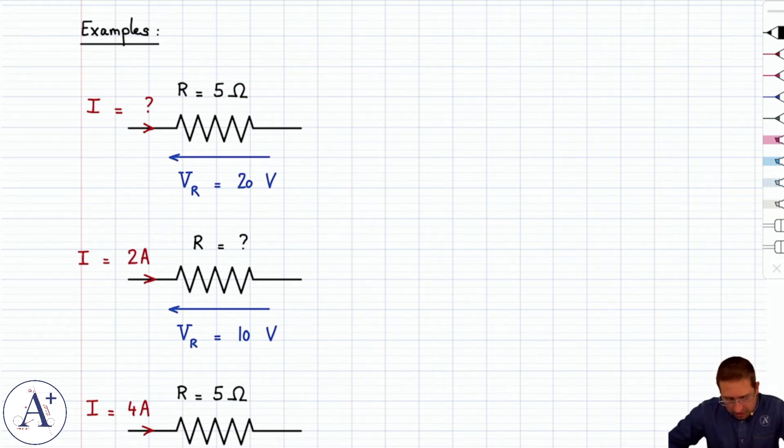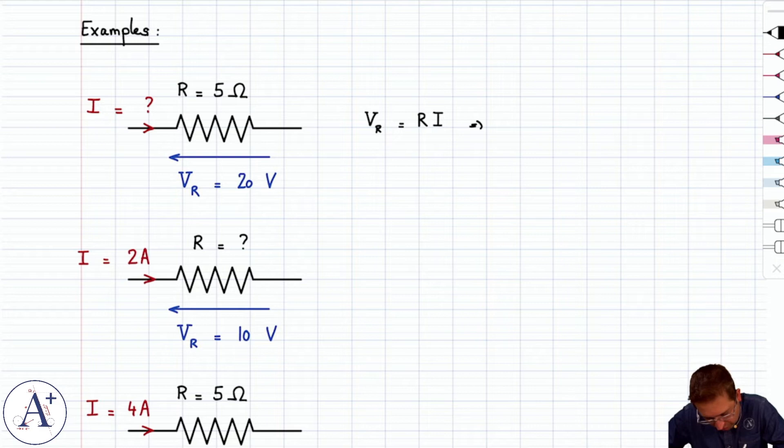In the first case, we're finding current. We know that V or V_R is R times I. Therefore, the current is V_R divided by R, which means 20 over 5, and that's 4 amps. Pretty straightforward. We'll do the other two real quick.